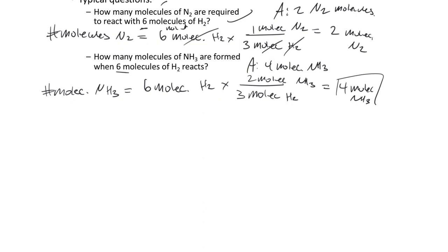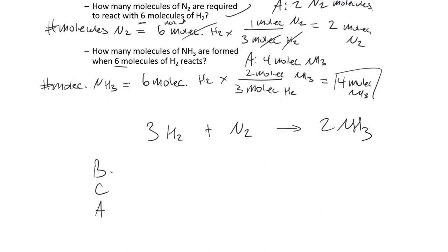Now let me introduce the BCA chart — Before, Change, After. Before: what's present before the reaction. Change: what happens due to the reaction. After: what's present following the reaction. Importantly, what you write in the Before row must be in moles or molecules — not grams. If you're given grams, you have to convert to moles first before filling in the chart.